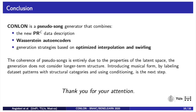Conlon combines the new PRC data description with Wasserstein autoencoders and generation strategies based on optimized interpolation and swirling to produce pattern-based pseudo songs. When trained on coherent datasets, the generated material is musically coherent and potentially useful in music production by professional musicians. The coherence of pseudo songs is entirely due to the properties of the latent space; in the generation, longer-term structure is not considered. In that sense, interpolating and swirling are closer to improvisation than to composition in musical practice. A natural next step is to label dataset patterns with structural categories like verse and chorus, and introduce musical form via mechanisms of conditioning.